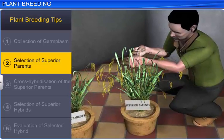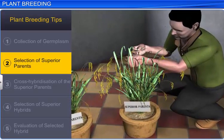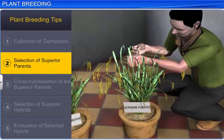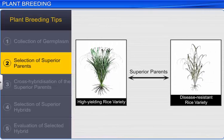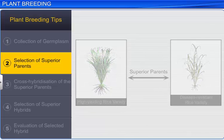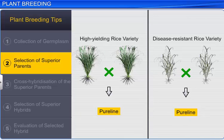The second step is the selection of superior parents. Here, two plants with the different desired characters are selected from the available germplasm. Then, they are made to self-cross to get a pure line of those varieties.